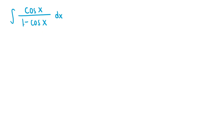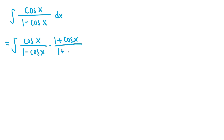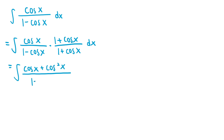Let's do the integral of cosine x over 1 minus cosine of x. We should start off by multiplying both the top and bottom parts of the fraction by 1 plus cosine x over 1 plus cosine x, which is the conjugate of the denominator. If we simplify this expression, this becomes cosine of x plus cosine squared of x over 1 minus cosine squared of x, since 1 minus cosine x times 1 plus cosine x equals 1 minus cosine squared of x using the difference of squares.